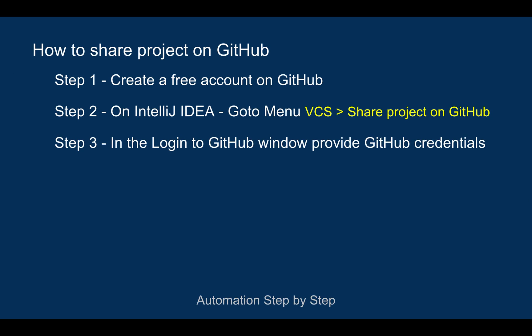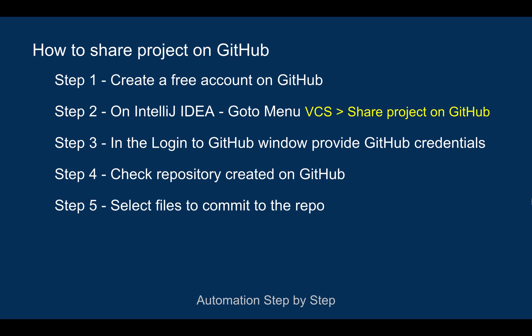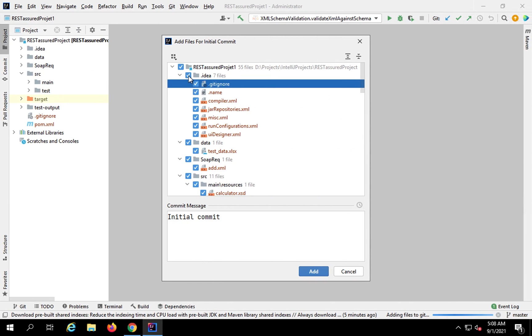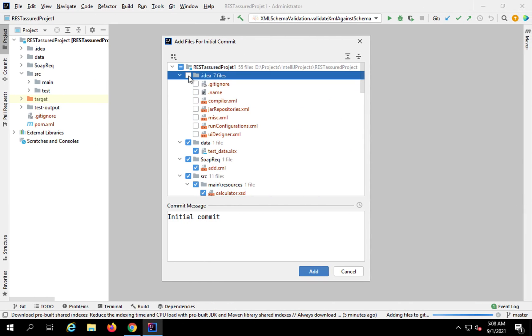In case you get a login window for GitHub, you can provide your GitHub login credentials and that will log you in. We have confirmed the repository is created on GitHub. Now step number five is to select the files that we need to commit to our remote repository on GitHub.